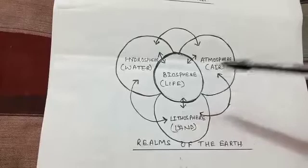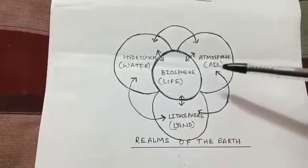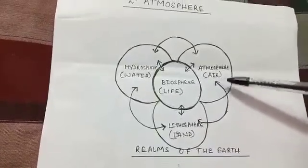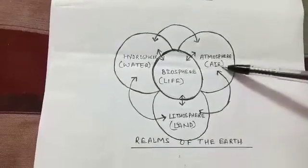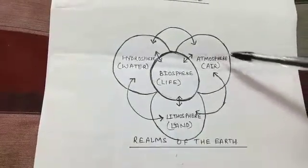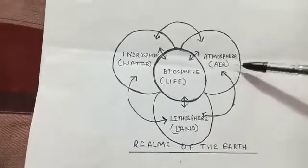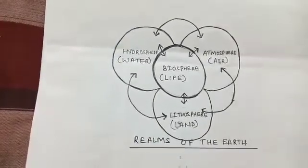Now the blanket of air that surrounds the earth is called atmosphere and in this chapter we will study about atmosphere. How is this atmosphere held in its place? It is held in its place due to the earth's gravitational pull.